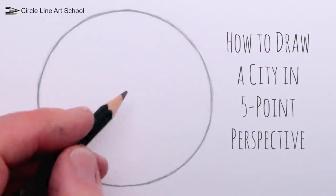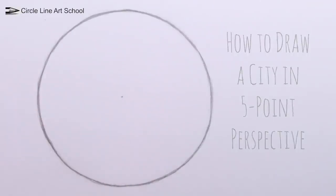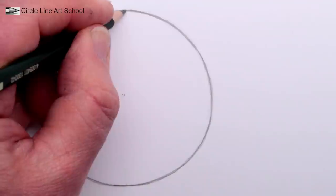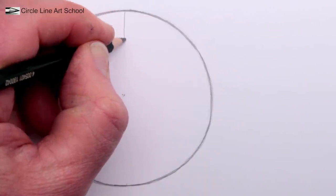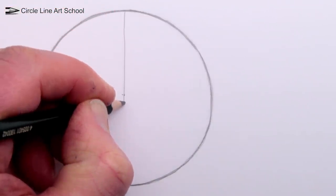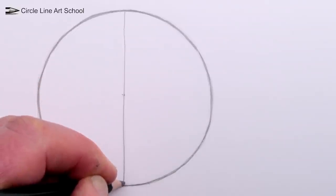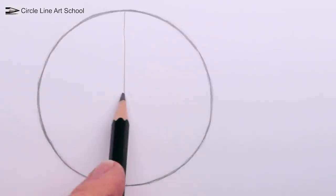Once you have a circle, draw a dot in the center. Next, draw a vertical line through the middle of the circle. Now we need to draw a horizontal line across the middle of the circle.